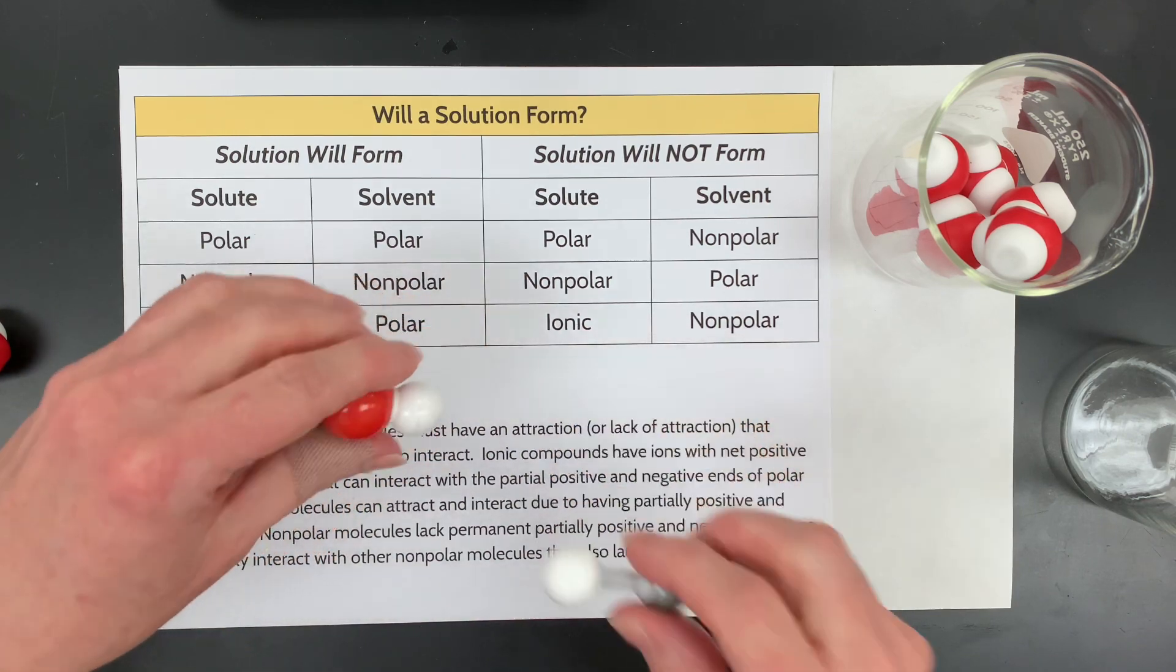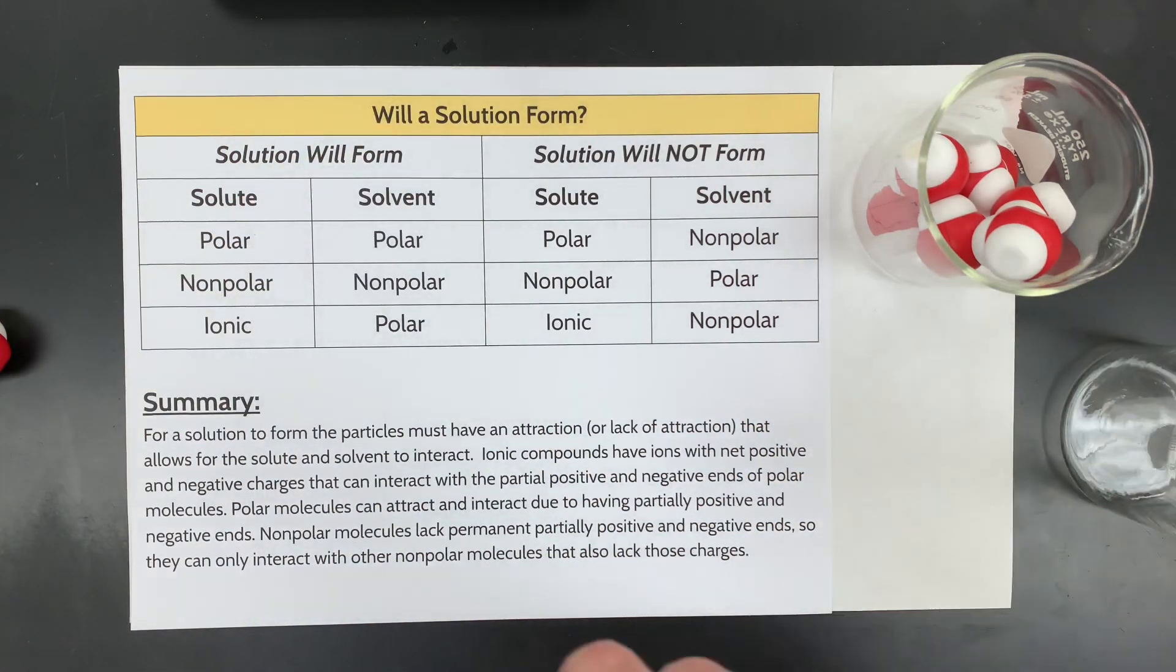If you take things that are ionic, what if I have permanent or what I call net positive and negative ions? And then I take something that's polar, like these little magnetic water molecules I have. What they found is that ionic things and polar things do interact. You can kind of watch how this interacts like that. And so the solution did form. But if I try to put something ionic with something that's nonpolar, then the solution did not form.